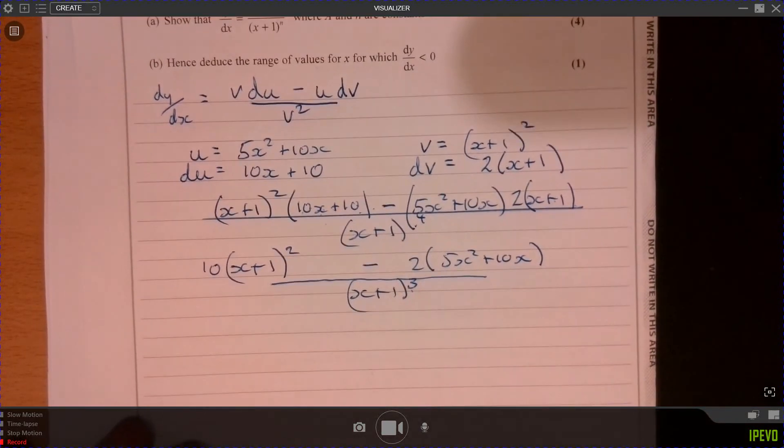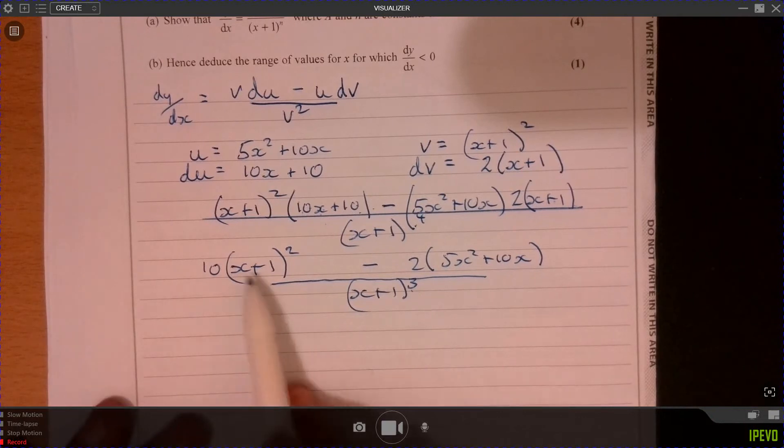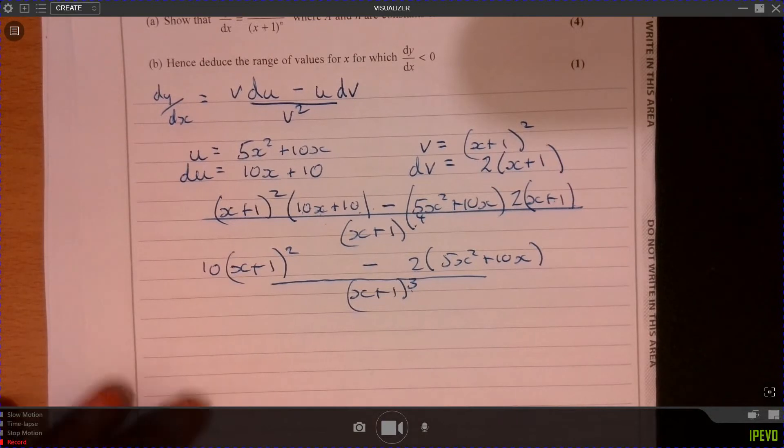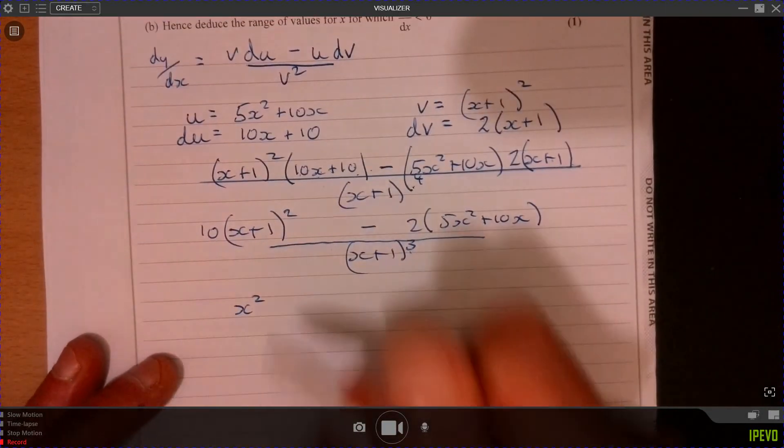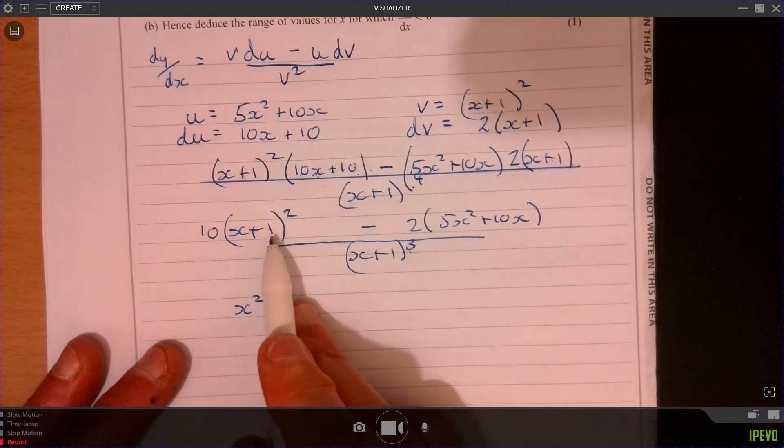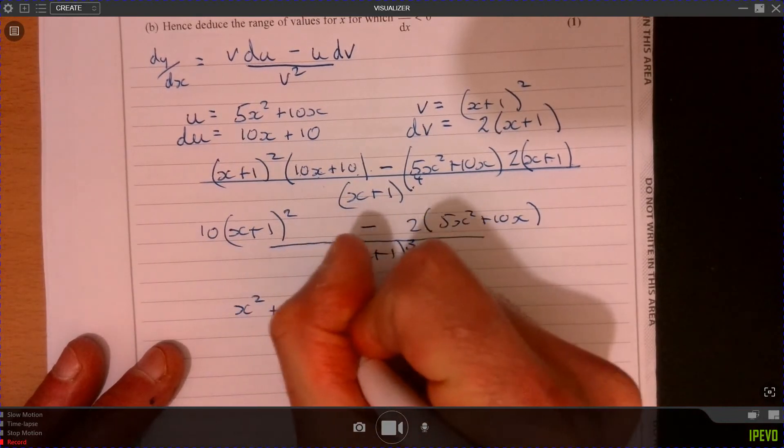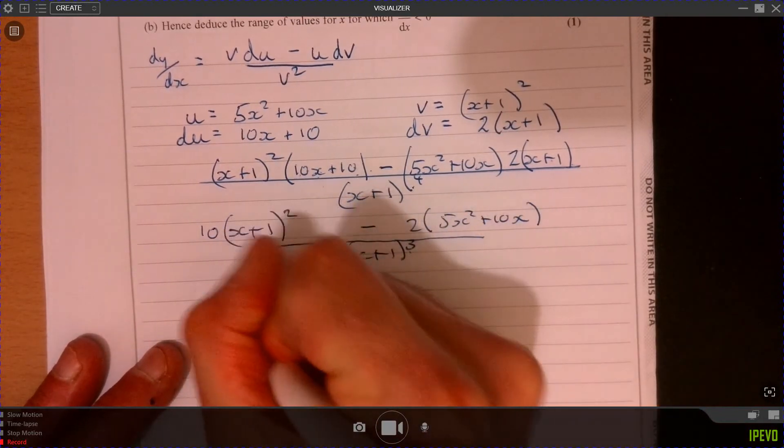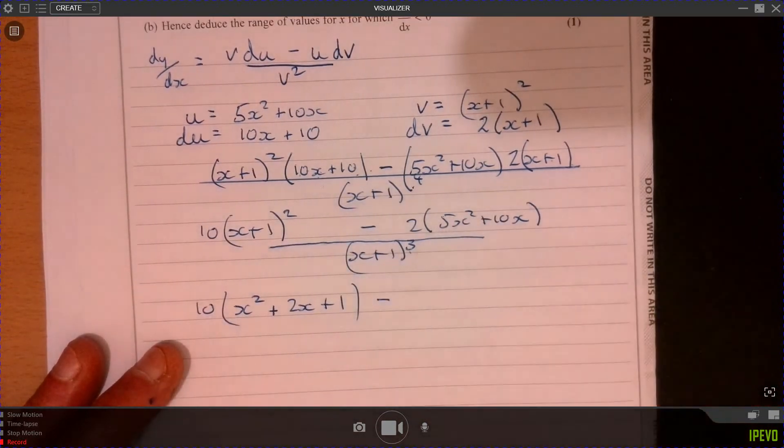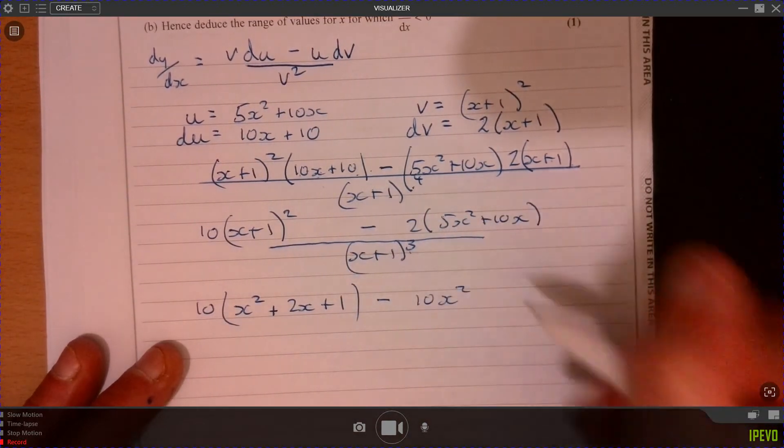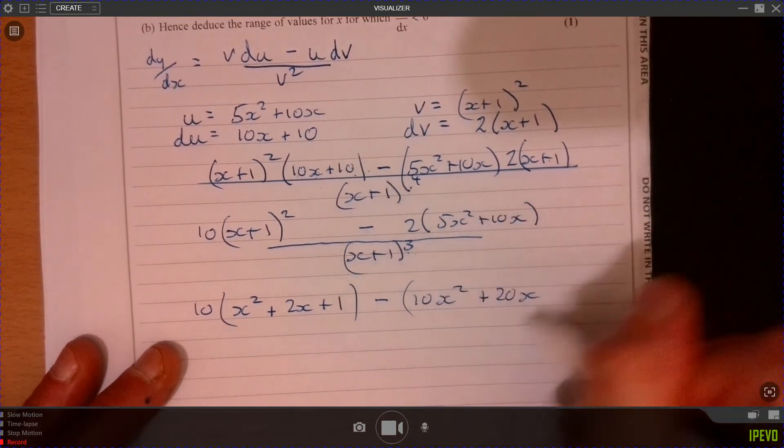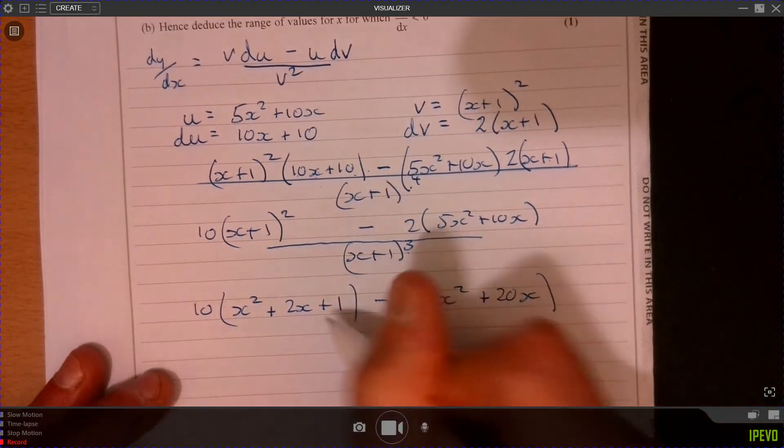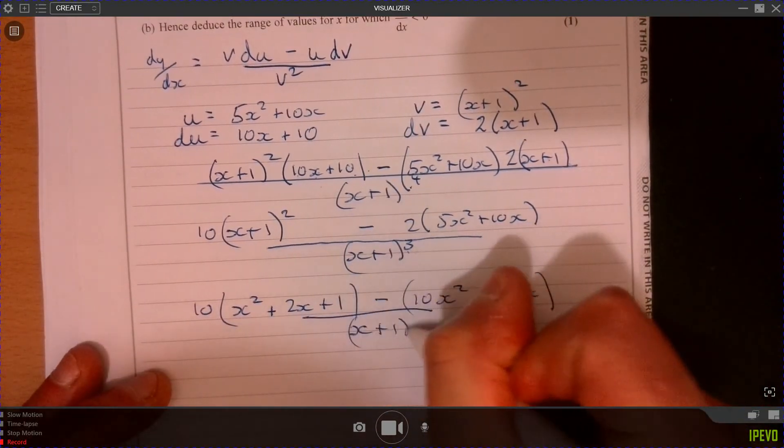All right. At this stage, where are we going to go from here? Well, let's just multiply out the top and see where that takes us. That seems to be the obvious thing to do. So if we multiply out this, don't be scared by it, because let's just see what happens. So if I multiply x plus 1 squared, that's going to be x squared 2x plus 1. All of that multiplies by 10. And then we're going to take away 10x squared plus 20x. Oh, nearly made a mistake there. Remember, it's take away all of that. And then that's over x plus 1 cubed.